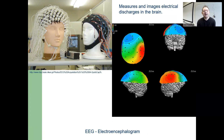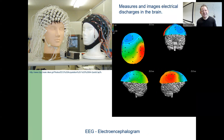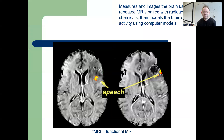EEG, electroencephalogram, measures electrical discharges in the brain. In this case, you basically wear a cap or helmet with various electrodes that monitor electrical activity. This isn't quite as accurate as some of the other techniques, because you're measuring brain activity with electrodes that are outside the skull. But you can get some very interesting information using this technique. An fMRI, functional MRI, measures images of the brain using repeated MRIs paired with radioactive chemicals that model the brain's activity using computer models.